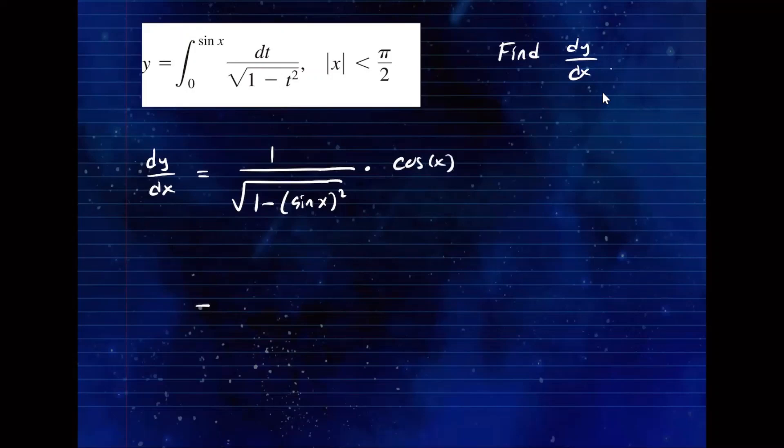Just to write this in a simplified form, this is cosine of x over the square root of 1 minus sine squared of x, dy/dx. So that is our derivative, which is little f(x). Now you can leave it right here, but you can also simplify this answer a little bit more by using the identities we know from before.